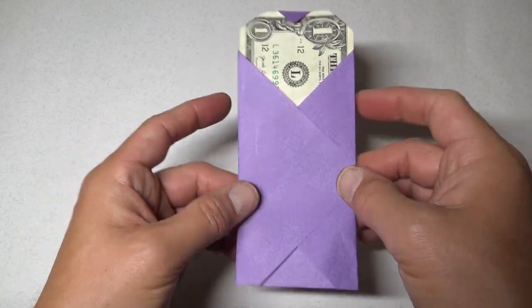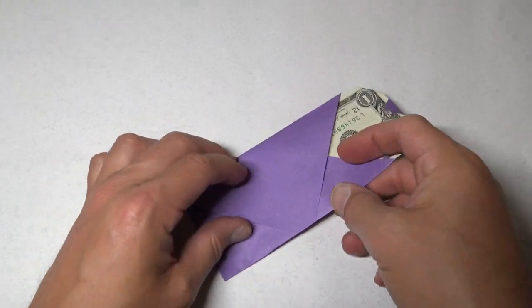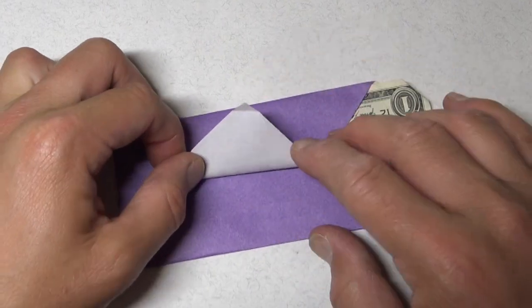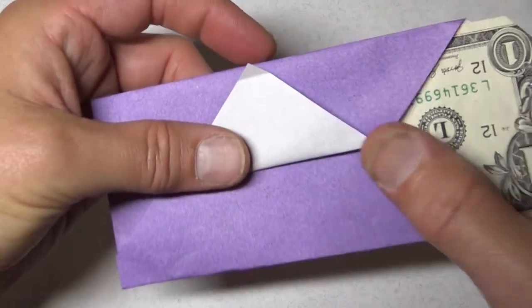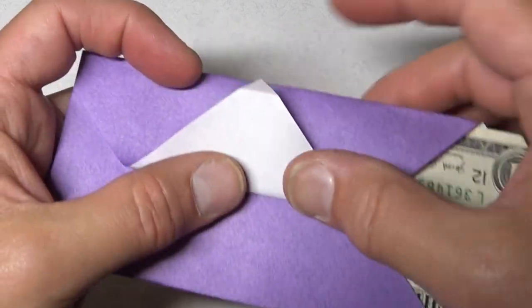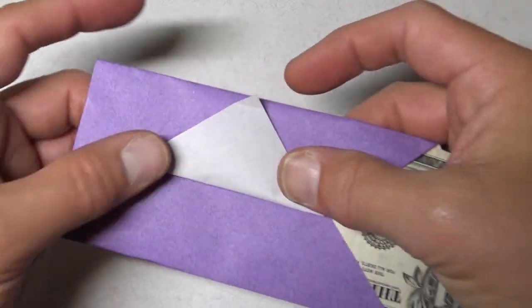But I want to show you a way to really lock it into place in a cooler way. So what you're going to do is take this flap and fold it so that this edge aligns with this edge and this edge aligns with this edge.